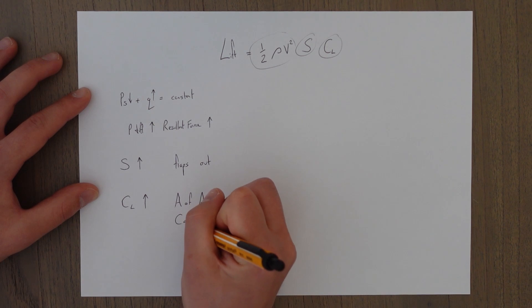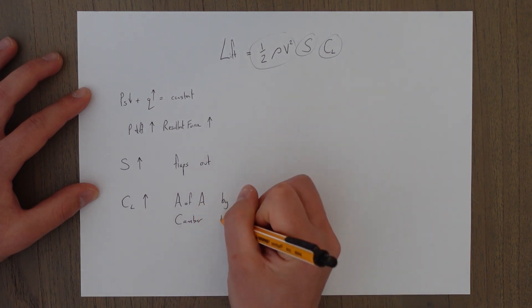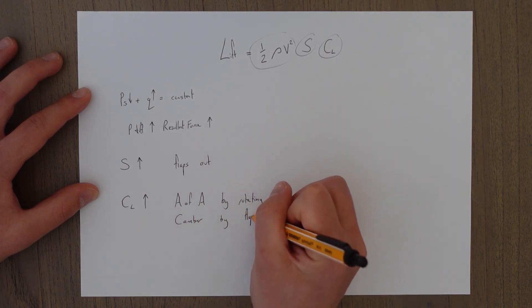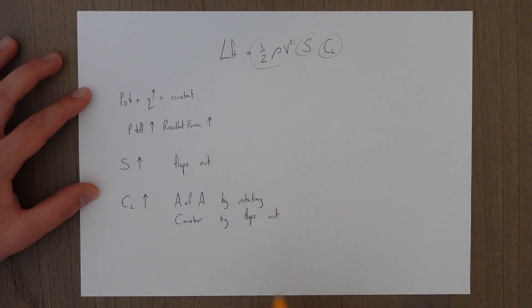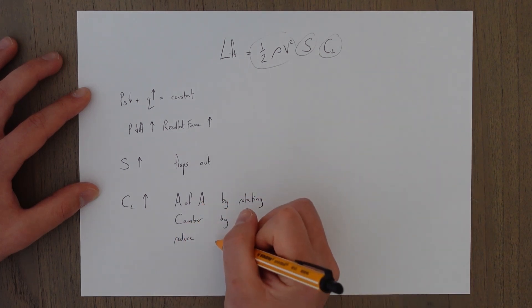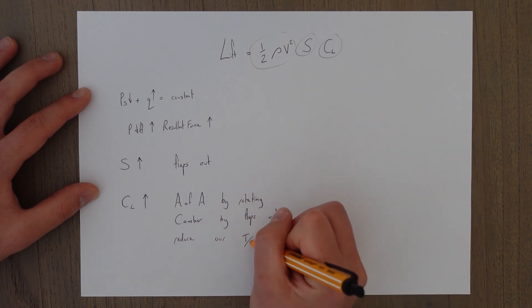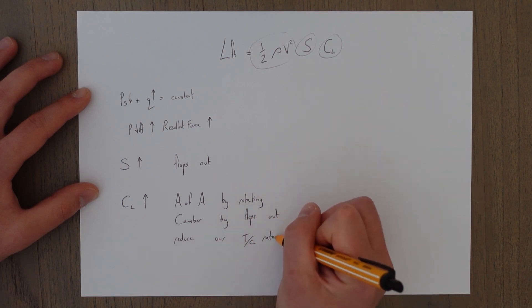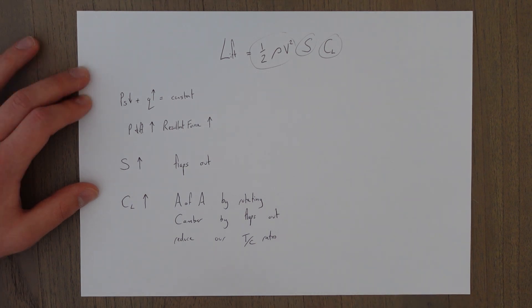We increase our camber by putting the flaps out, but we actually reduce our thickness-chord ratio by doing this. So by extending flaps for takeoff you have more area and more camber. The only thing that goes down is our thickness-to-chord ratio, but it's a two-for-one exchange, so this is why flaps are a good thing for takeoff.